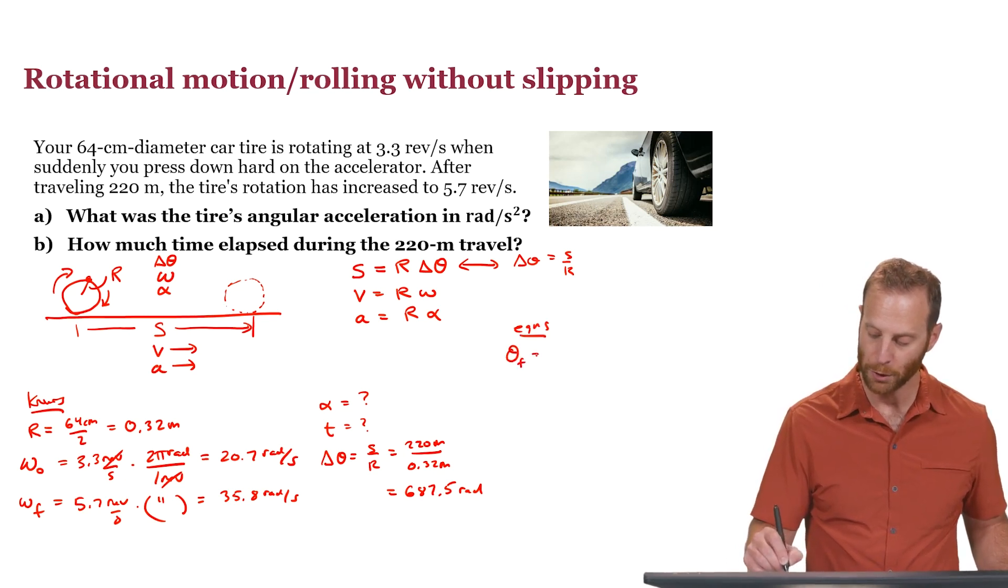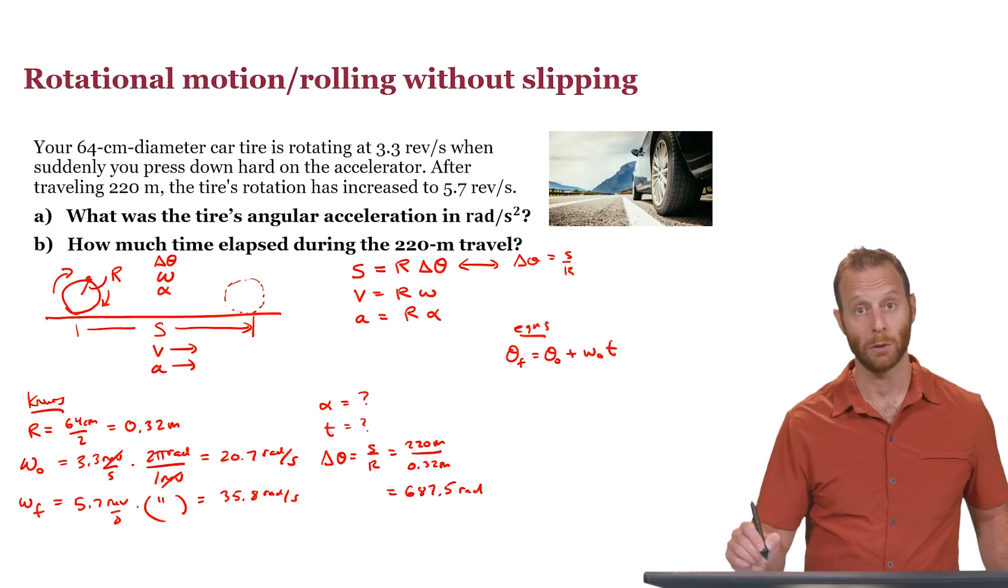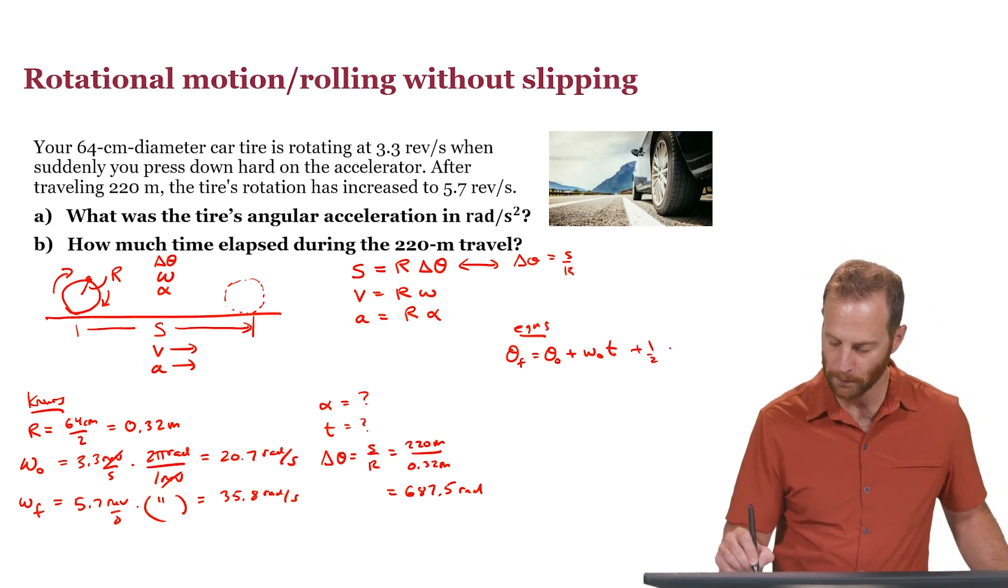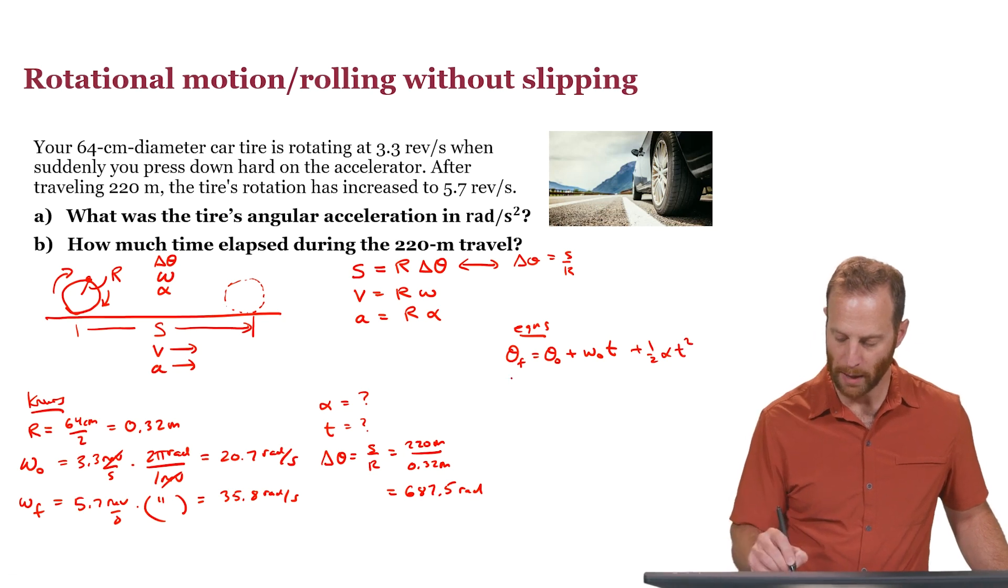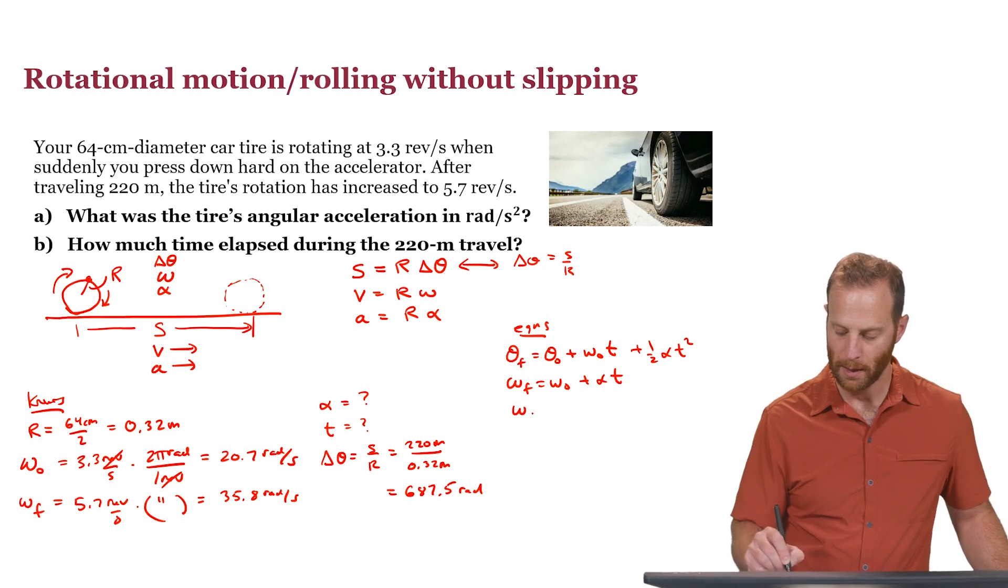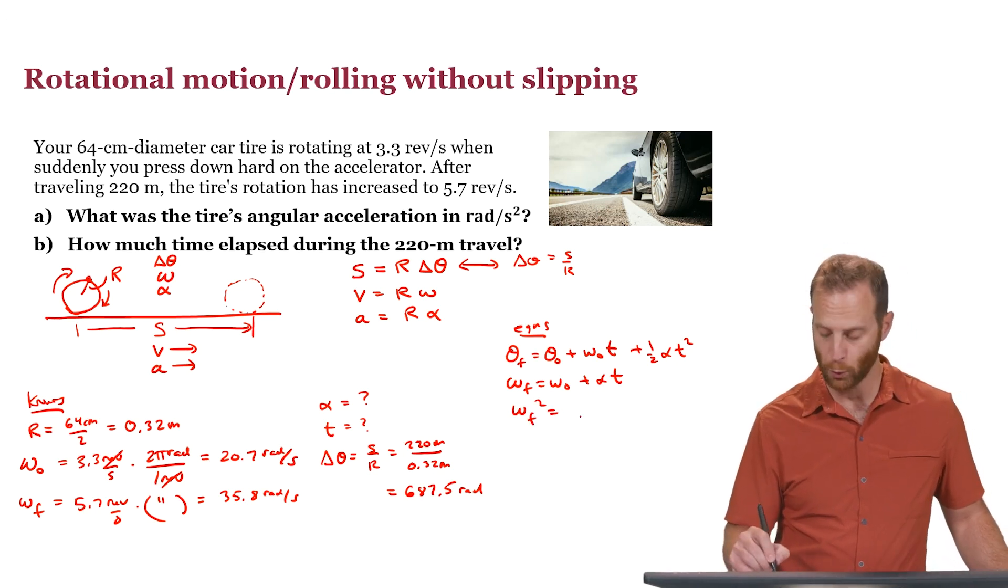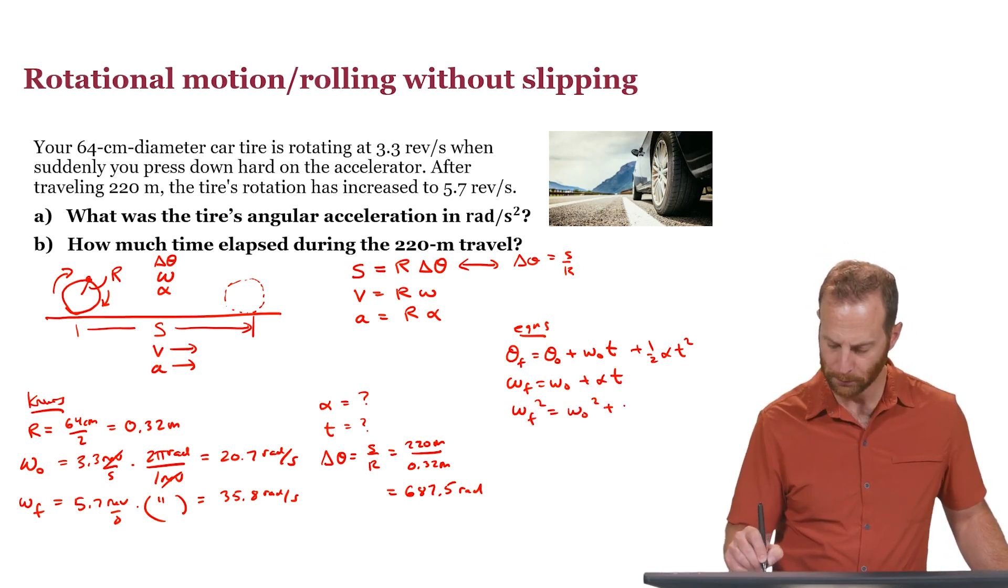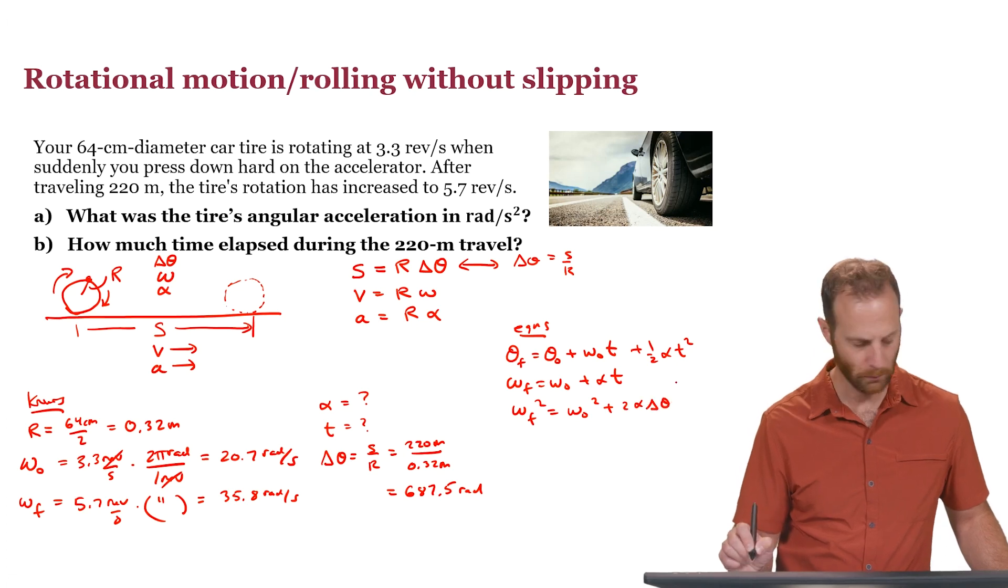The equations that we might need are these. The final angular position equals initial angular position plus omega naught t. These look just like the linear versions. We have omega final equal to omega initial plus alpha t. And we have the one that involves the squares of the speeds.